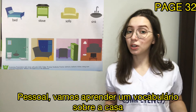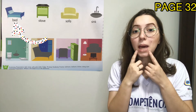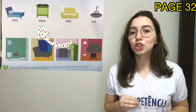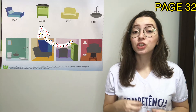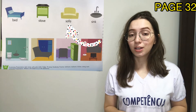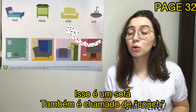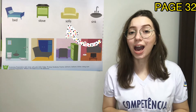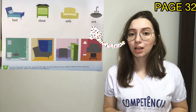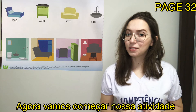Let's start. Guys, let's learn some vocabulary about the house. Bed — this is a bed. Stove — this is a stove. It is also called couch. Sink — this is a sink. Okay, now let's start our activity.